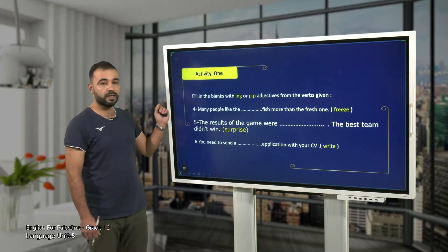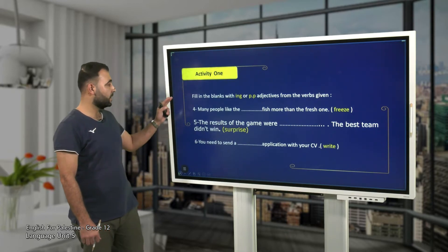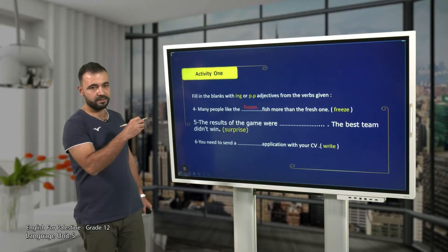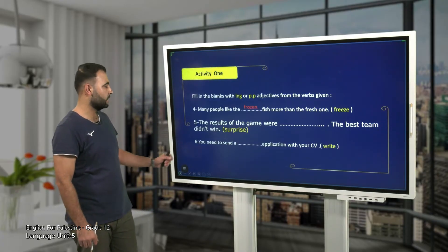Now the second part of this activity: fill in the blanks again with -ing or past participle adjectives from the verbs given in brackets. Read four, five, and six and try to find the suitable answers. You have two minutes. Good. Let's see your answers. Number four: many people like the frozen fish more than the fresh one — yes, they like the frozen fish.